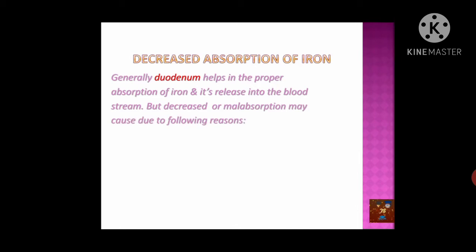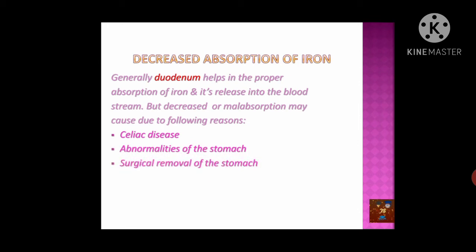Decreased absorption of iron is another cause. Iron is absorbed by the duodenal part of the small intestine — which has three parts: duodenum, jejunum, and ileum — and it is the duodenum that absorbs iron for distribution to the general circulation. This absorption can be problematic due to celiac disease, where abnormality in the structure of the duodenal layer prevents proper function. Abnormalities of the stomach are also important because HCl within the stomach creates an acidic environment necessary for converting the ferric form of iron into the ferrous form, which is the absorbable form taken up by the duodenum.